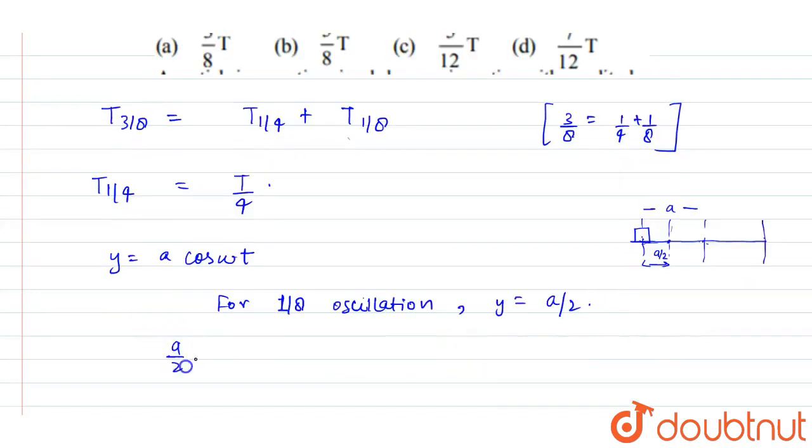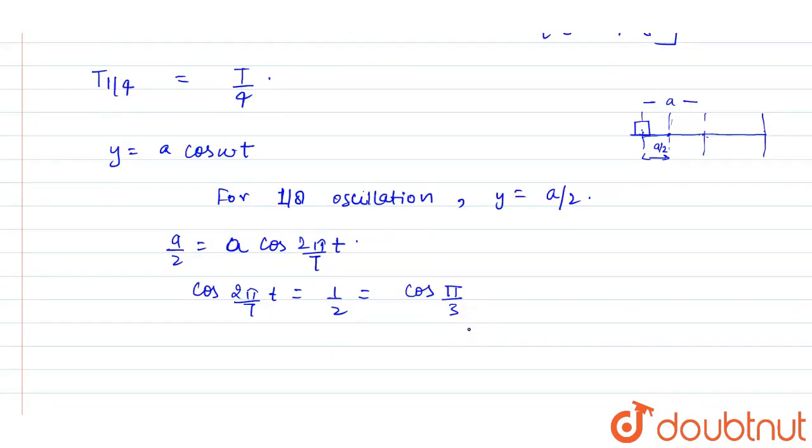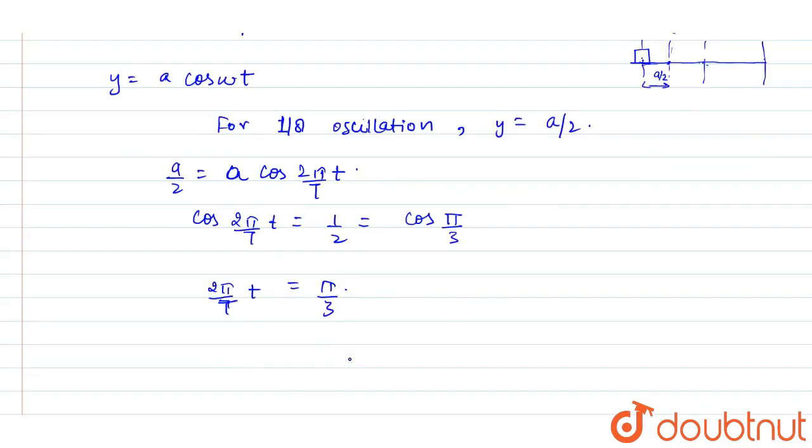So we can write that a/2 equals a cos(2π/T × t). From here we can write that cos(2π/T × t) = 1/2. And this value of 1/2 is equal to π/3 because cos 60° equals 1/2. So from here we can write that 2π/T × t = π/3, or t = T/6.